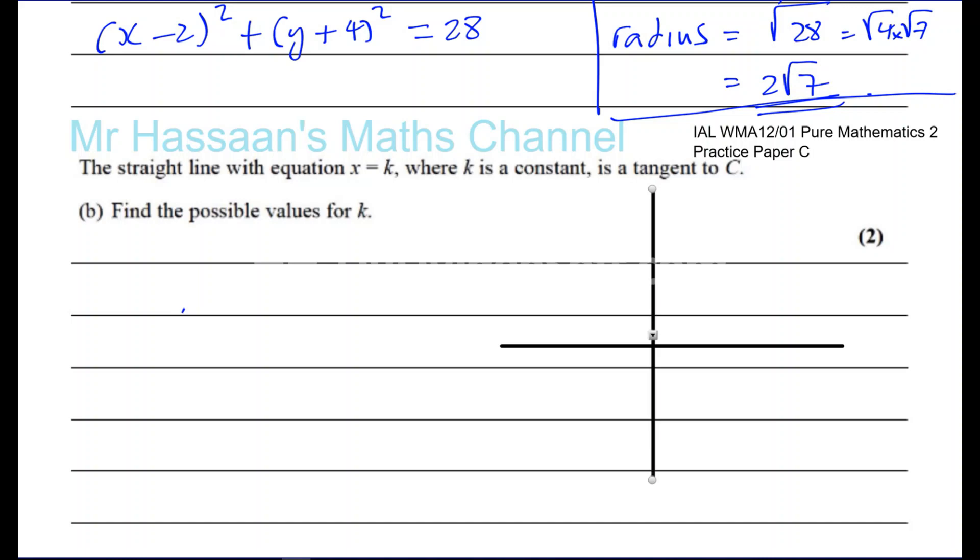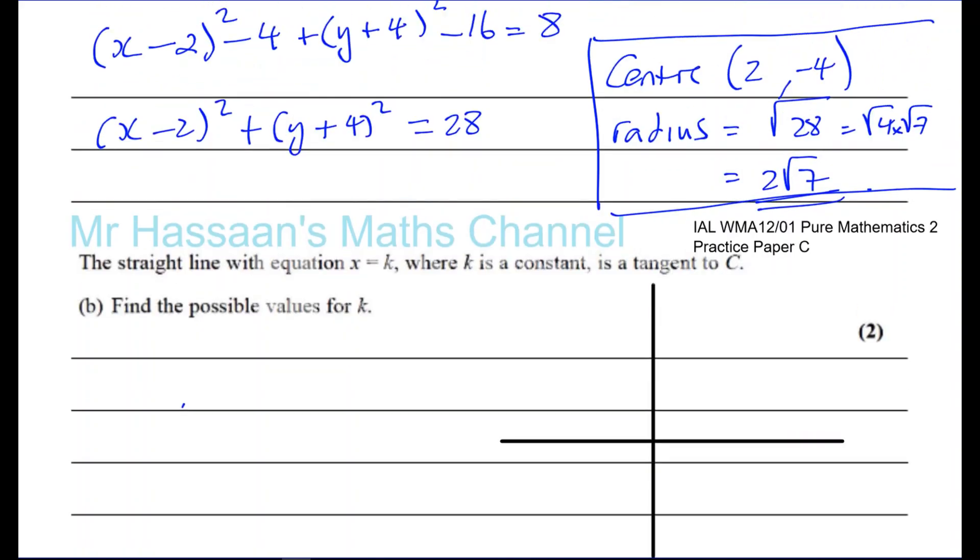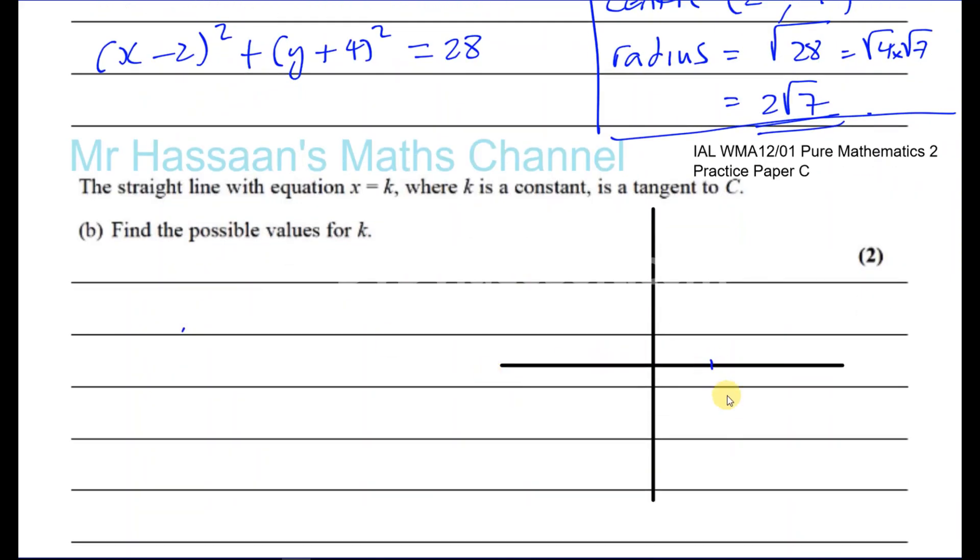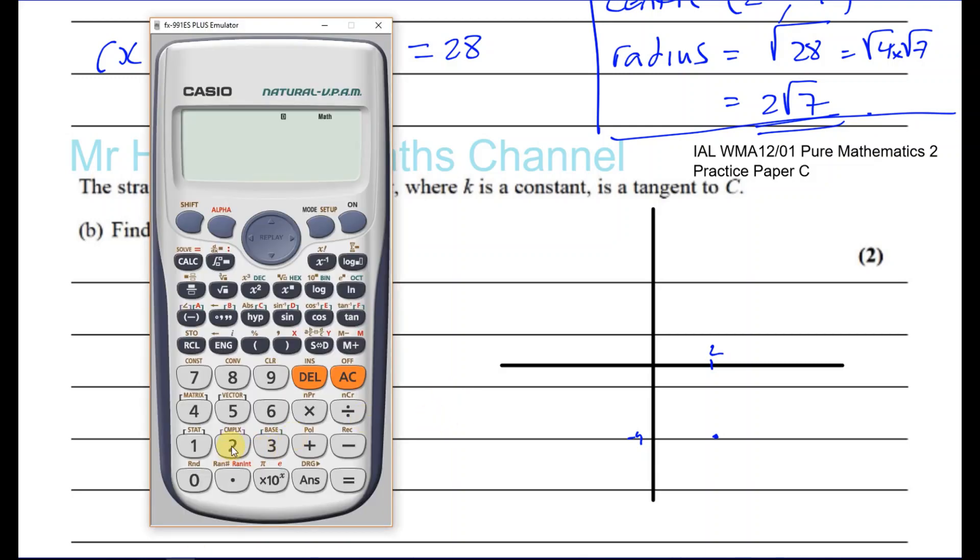x equals k is just a vertical line. If you think about it, this circle has a center at 2 minus 4. So that's 2 and that's minus 4, that's the point where the center is. And its radius is 2 root 7, so it's bigger than 2. 2 root 7 gives you something like 5.29.